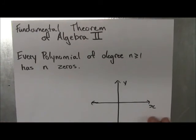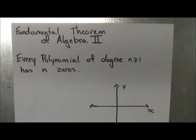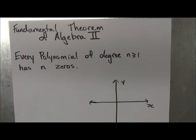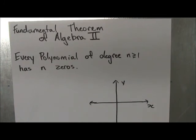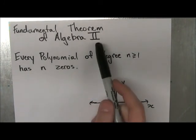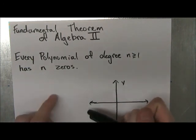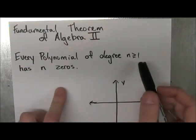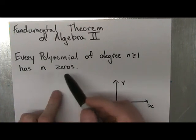All right, so this is our next theorem. It's similar to the last one, actually very similar. It's called the fundamental theorem of algebra 2, and it states that every polynomial of degree n greater or equal to 1 has n zeros.